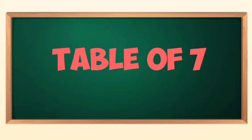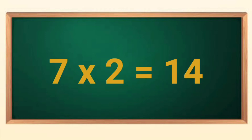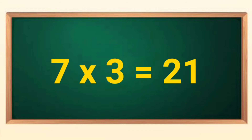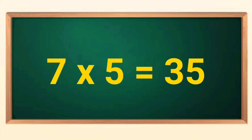Table of seven. Seven ones are seven. Seven twos are fourteen. Seven threes are twenty-one. Seven fours are twenty-eight. Seven fives are thirty-five.